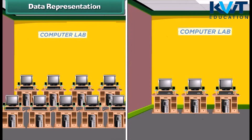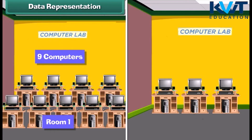Look at the diagram that shows the arrangement of computers in your computer school. Look at the plan and then answer the questions that follow. How many computers are there in room one? There are nine computers in room one. How many computers are there in room two?